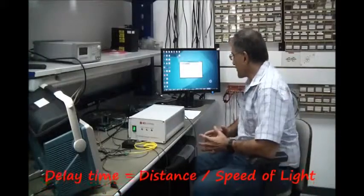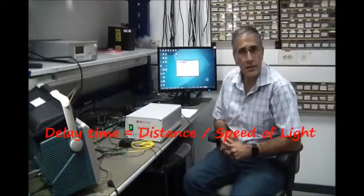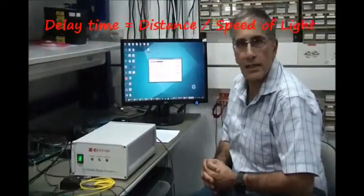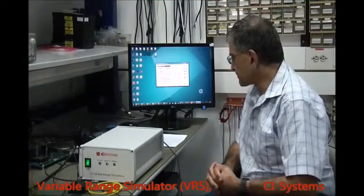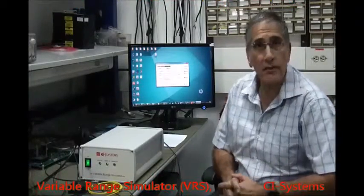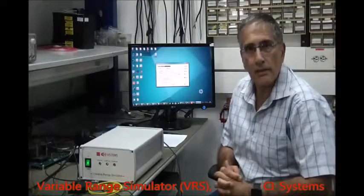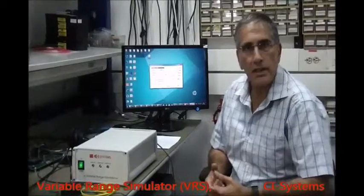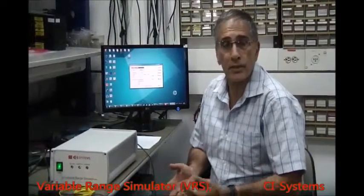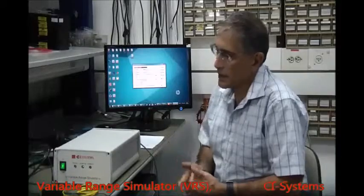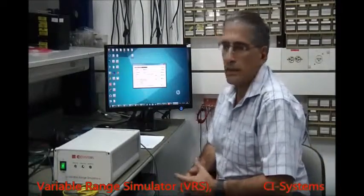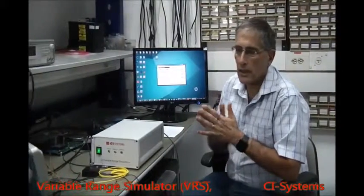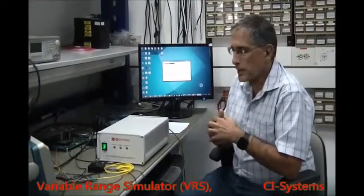A little bit about the theory of operation of the VRS. It's using this very simple principle that distance is equal to velocity times time. So, based on the desired range, the output pulse is delayed from the input trigger pulse. The input trigger could be either optical or the laser input from the LRF or electronically. And then, based on some sort of differential time that is delayed, the output comes out.